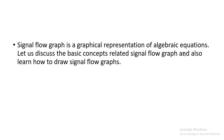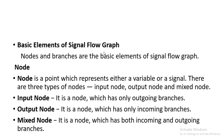Let us see which are the basic elements of any signal flow graph. Nodes and branches are the basic elements of any signal flow graph. If you know the block diagram reduction rules and the block diagram of any closed loop system, then it will be very easy to solve signal flow graph examples.